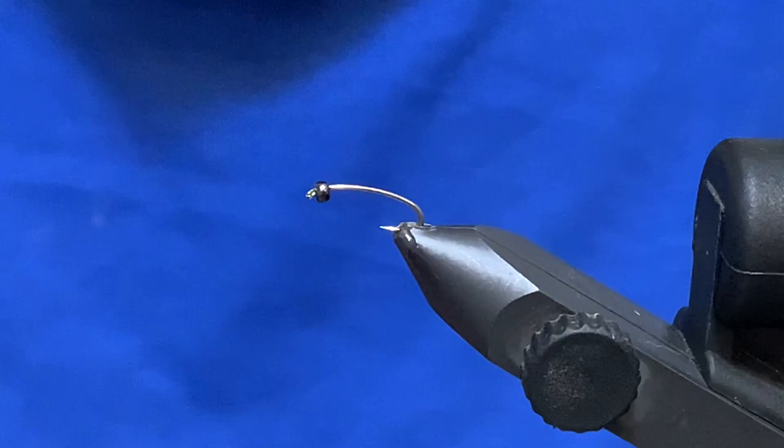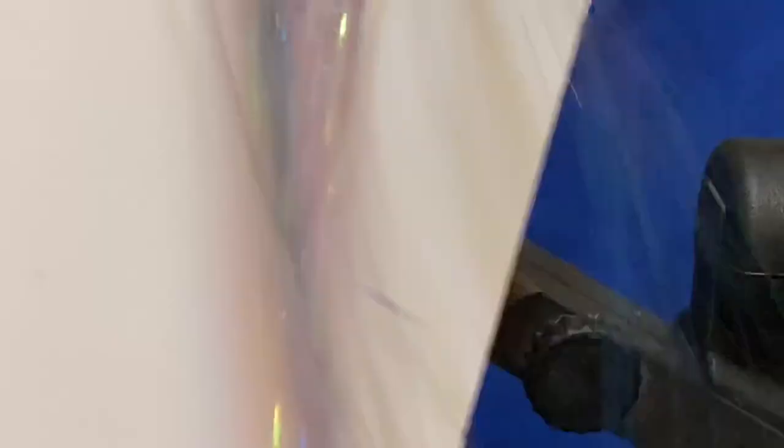This is what they look like here, so this is the peacock color and Daiichi 1760 with a black nickel bead. I'm just tying in with some red UTC 70.